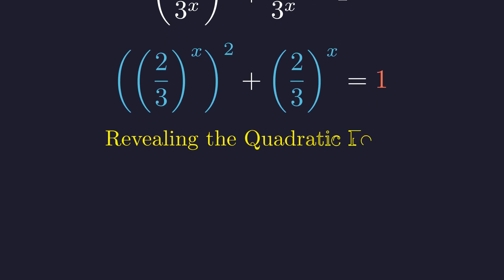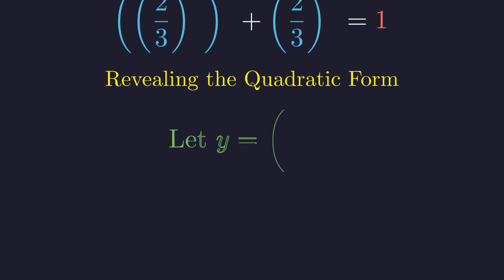To make this even more transparent, let's use a clever substitution that will convert our equation into a standard quadratic form. We'll make a substitution. Let's define a new variable, y, to be equal to this repeating expression 2 over 3 to the power of x. This is a common technique when faced with exponential equations.